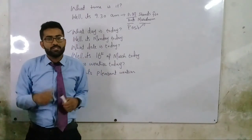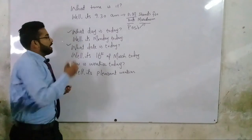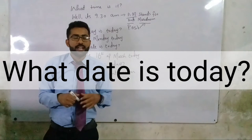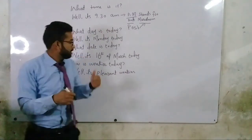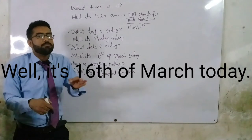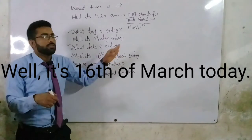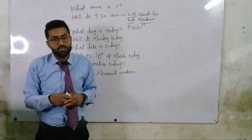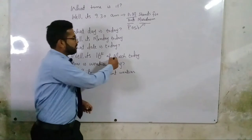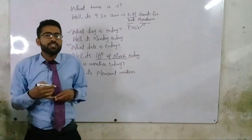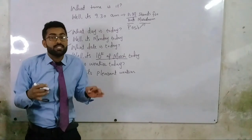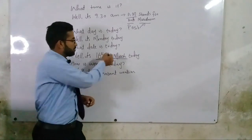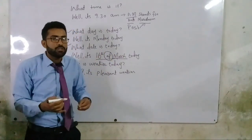It's Saturday today. Now, 'What date is today?' This is how we can inquire about the date. The answer is: 'Well, it's the 16th of March today' — you can add the year: 'It's the 16th of March 2020 today.' Many people say '16 March' but the correct form uses the ordinal: '16th of March.' This can also be pronounced as 'Oh, 16th of March today.'